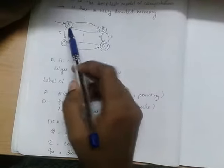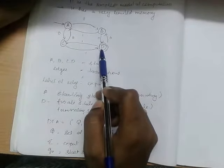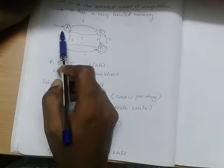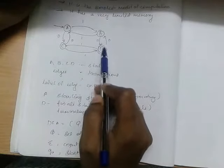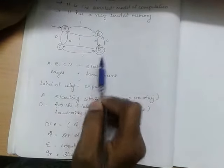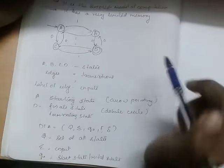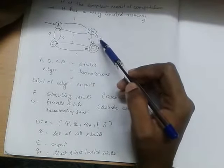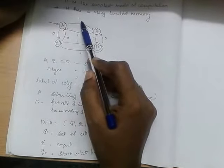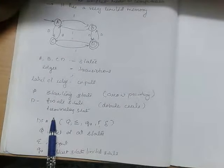Let's look at an example with states a, b, c, d. We have states in this diagram. This state is the initial state and this state is the final state. States are represented with edges between them. The starting state is indicated by an arrow point, and the final state is represented by a double circle — the terminating state.